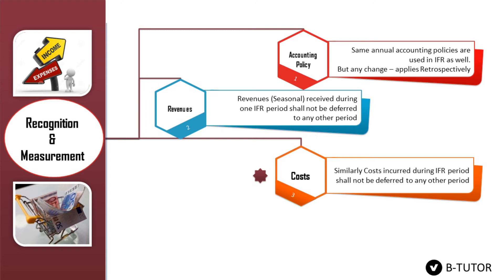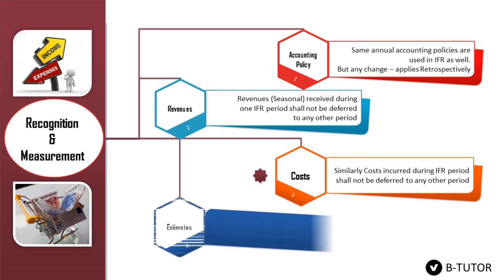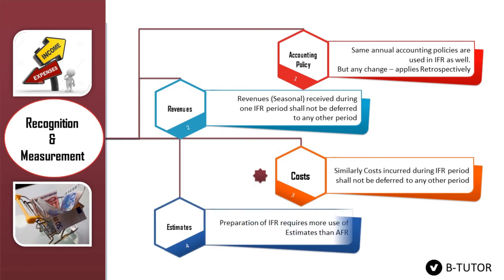There is one exception — income tax effect — which will be discussed in the next slide. Number four: accounting estimates. Generally, accounting involves use of many estimates, but IFR involves more use of estimates than an annual report.